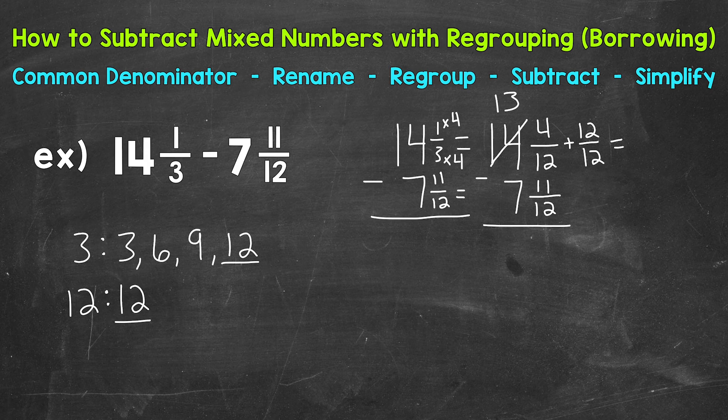So our new regrouped 14 and 4/12 is going to be 13 and 4 plus 12 is 16/12. So to recap real quick here, we borrowed from the 14, borrowed one whole from the 14, that gave us 13, and we gave one whole to the fractional part 4/12 and we wrote one whole as 12 over 12. That way we can easily add those fractions. We had that common denominator so we could do 4 plus 12 is 16 and then keep our denominator of 12 the same.